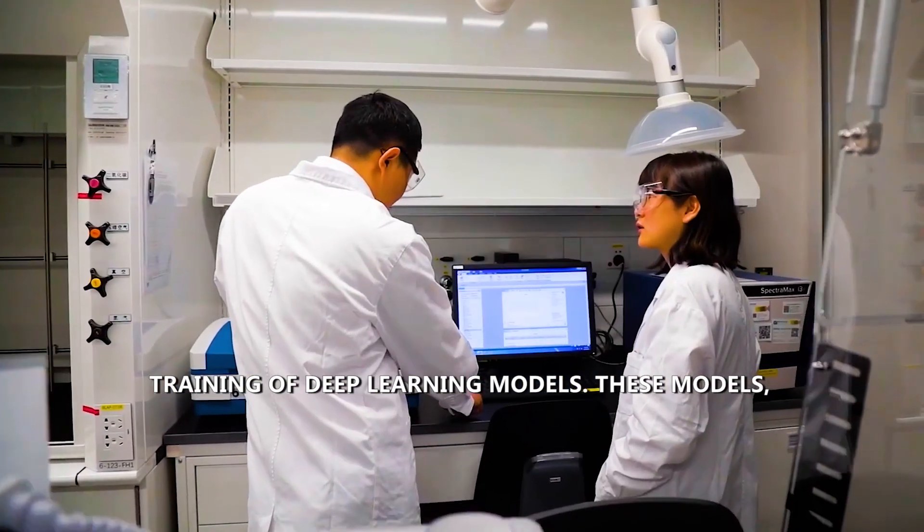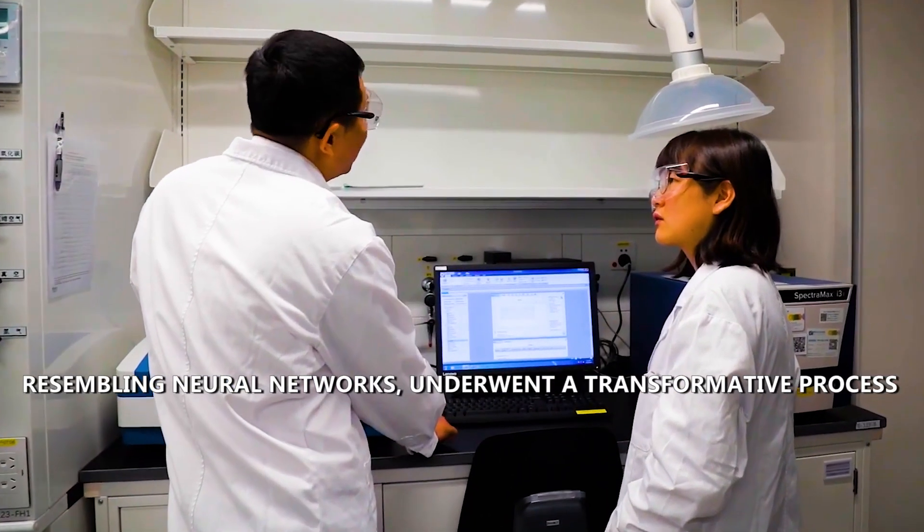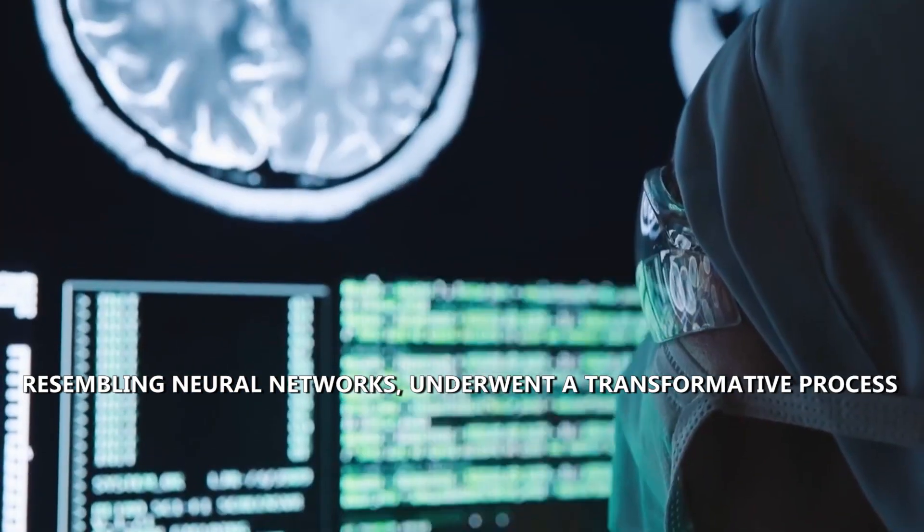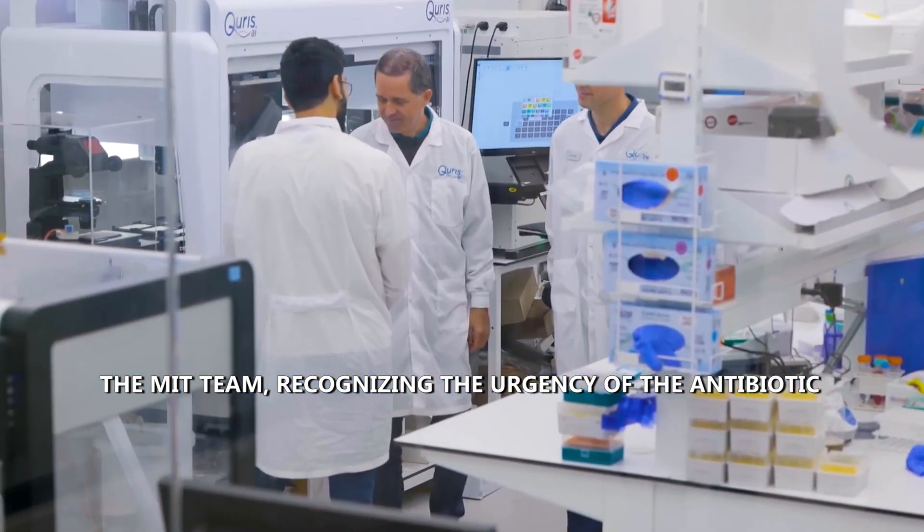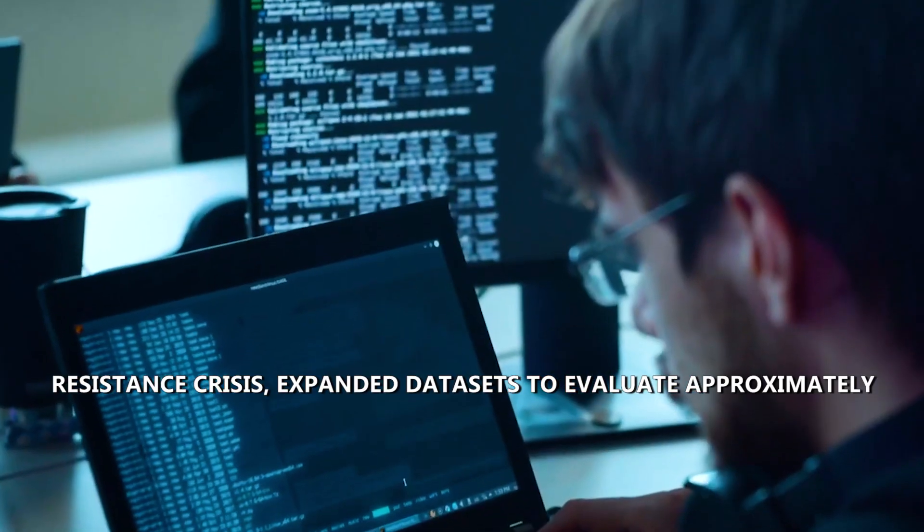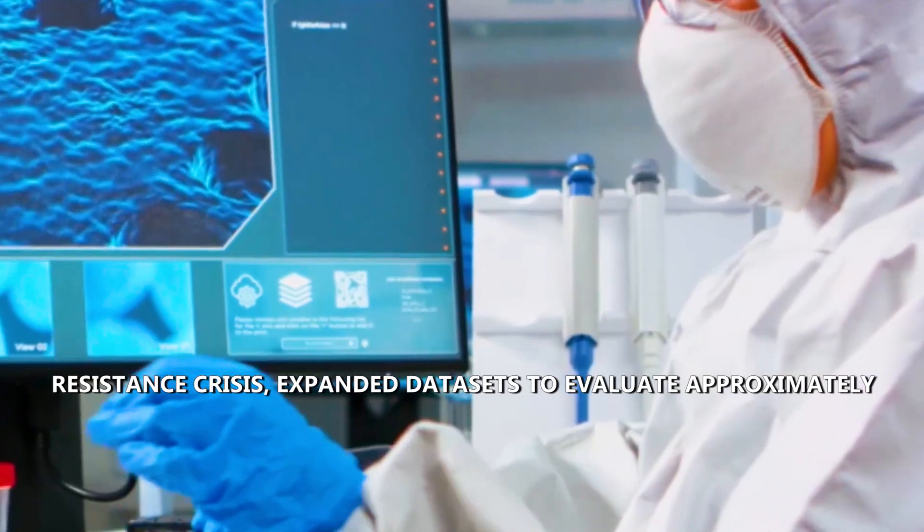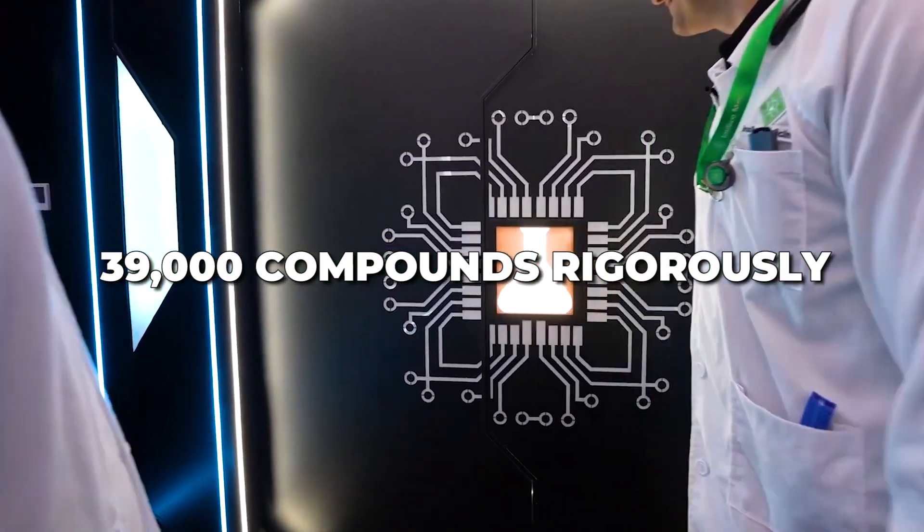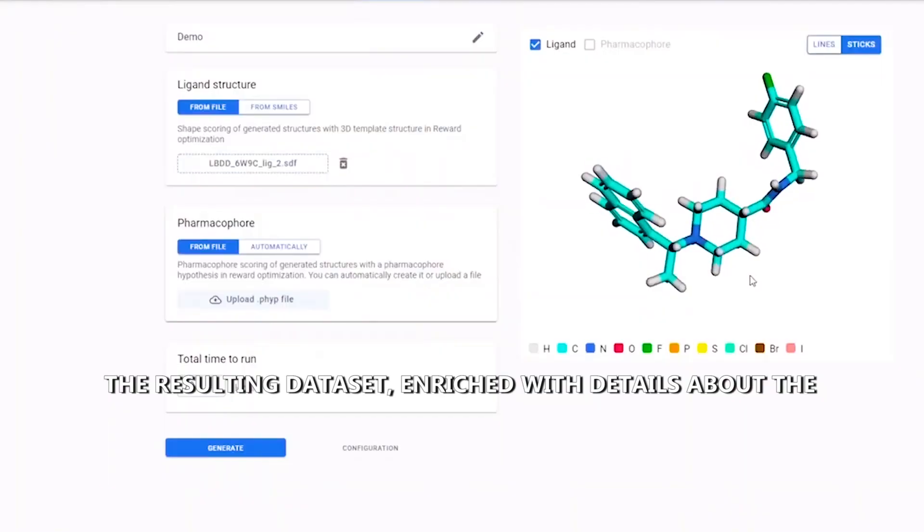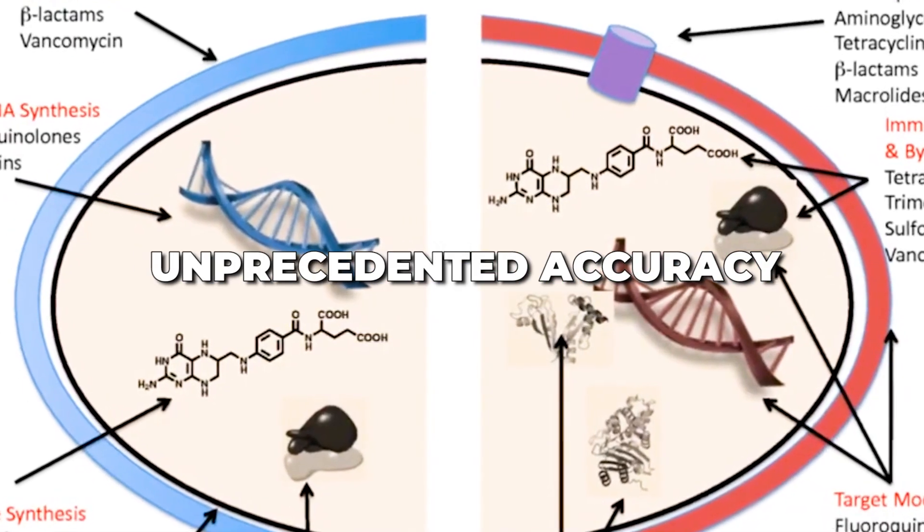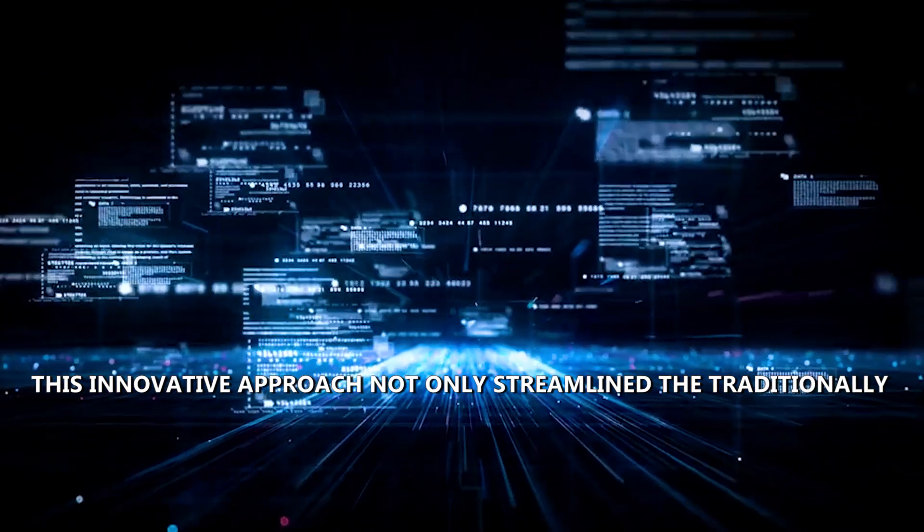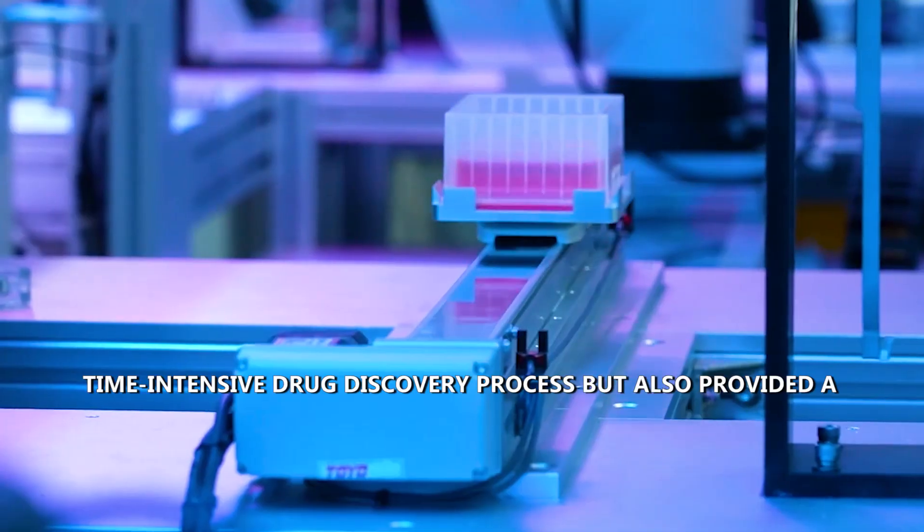Deep learning model training. At the heart of this groundbreaking discovery lies the extensive training of deep learning models. These models, resembling neural networks, underwent a transformative process to predict the antibiotic activity against MRSA. The MIT team, recognizing the urgency of the antibiotic resistance crisis, expanded datasets to evaluate approximately 39,000 compounds rigorously. The resulting dataset, enriched with details about the chemical structures of these compounds, empowered the deep learning models to make predictions with unprecedented accuracy.